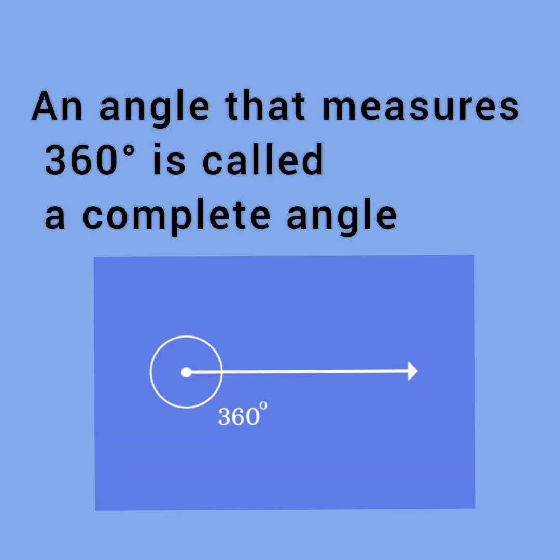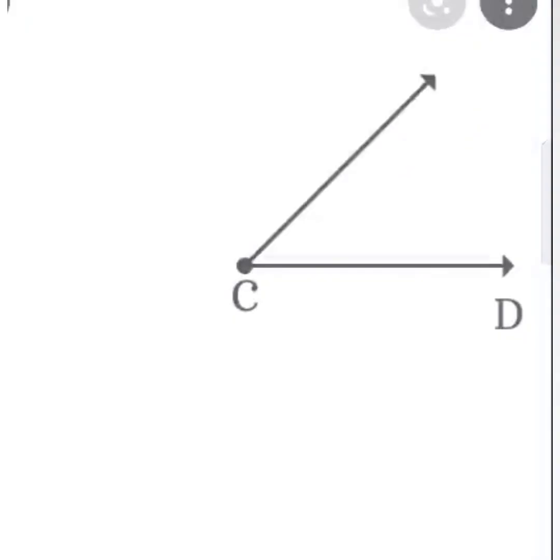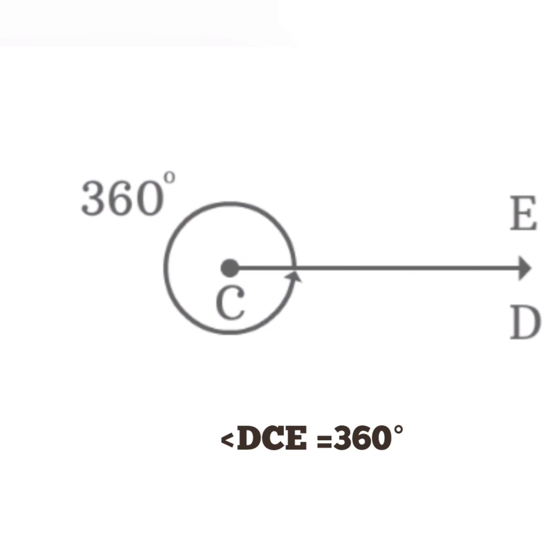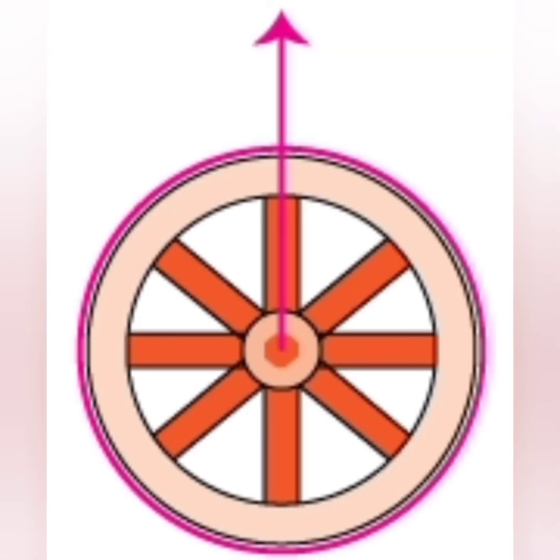Next is the complete angle. An angle that measures 360 degrees is called a complete angle. This will help you to understand more clearly. The arm CE rotates and reaches D and it makes a complete angle. Angle DCE is 360 degrees. Some of the examples of complete angles are given here.